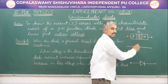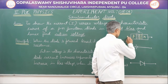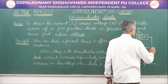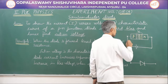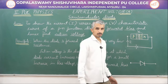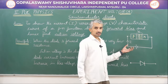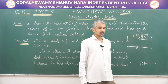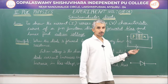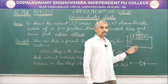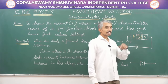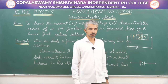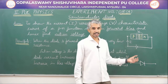A diode starts conducting current when you connect the P type to the positive of a battery and N type to the negative of the battery. Current starts to flow only when this barrier potential is overcome. As I keep increasing the voltage in the battery, when it has overcome the barrier potential of nearly 0.6 volts, only then current starts to flow. We will verify this in today's experiment.